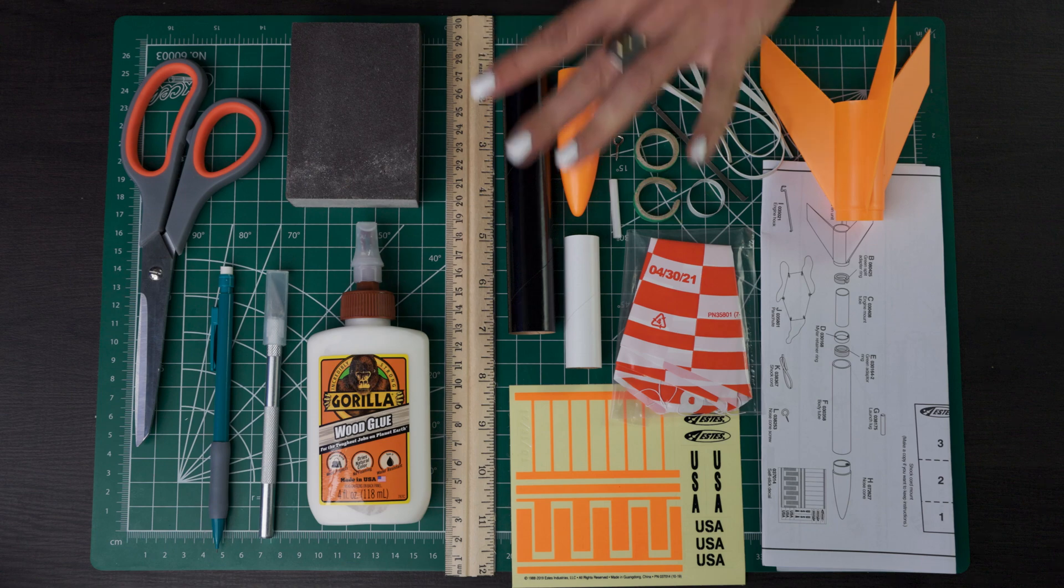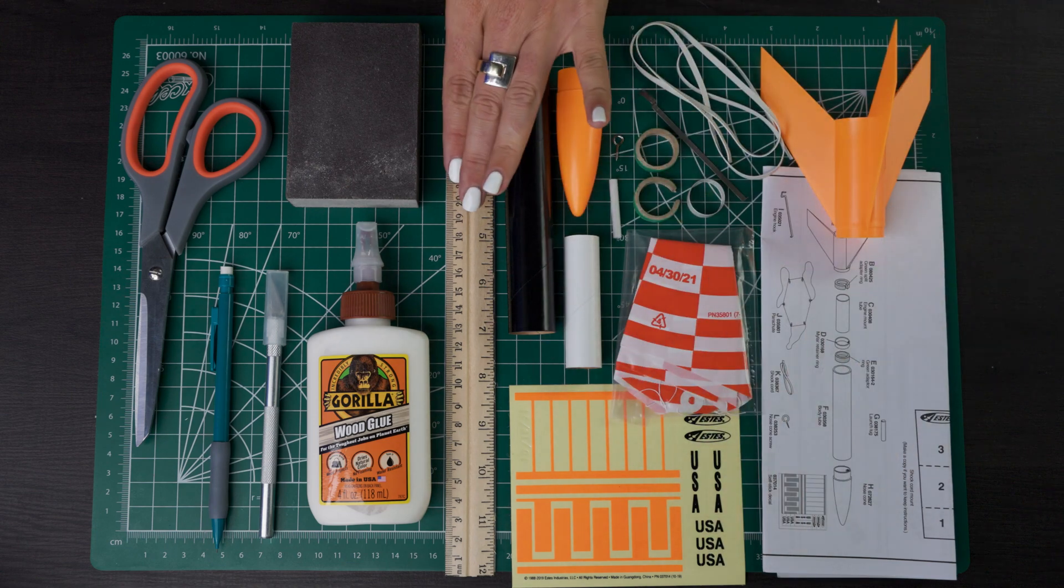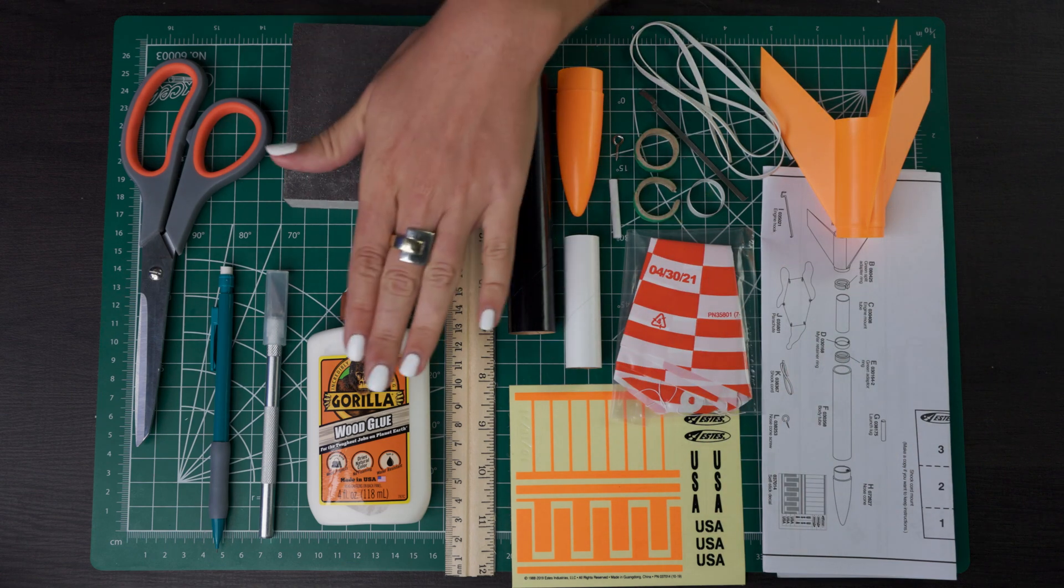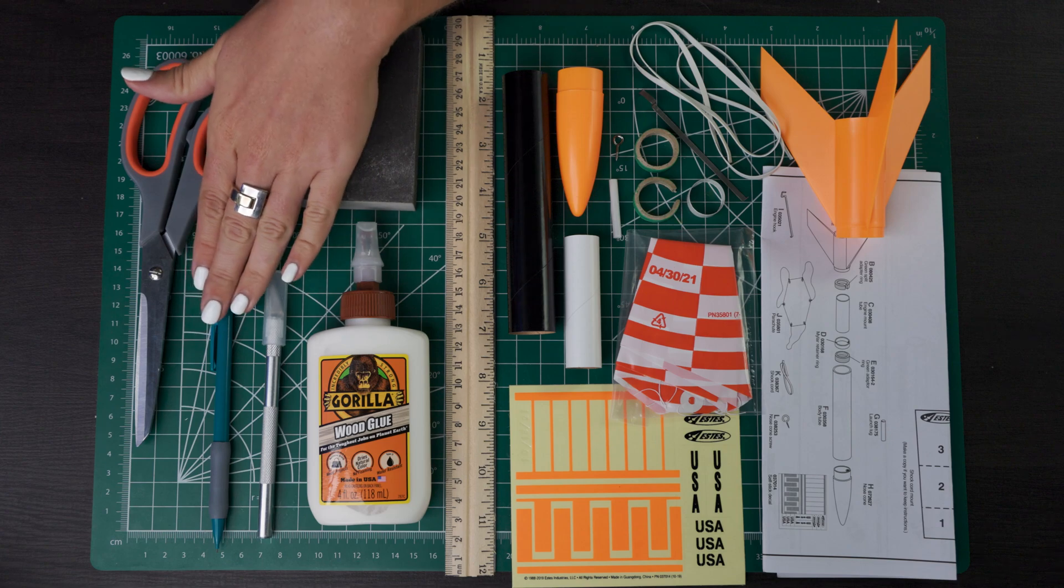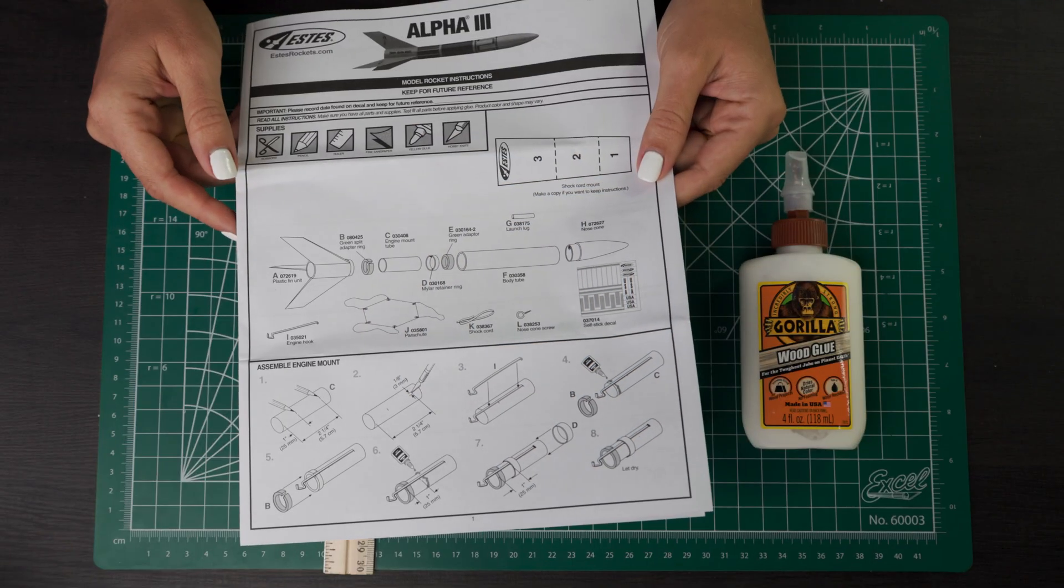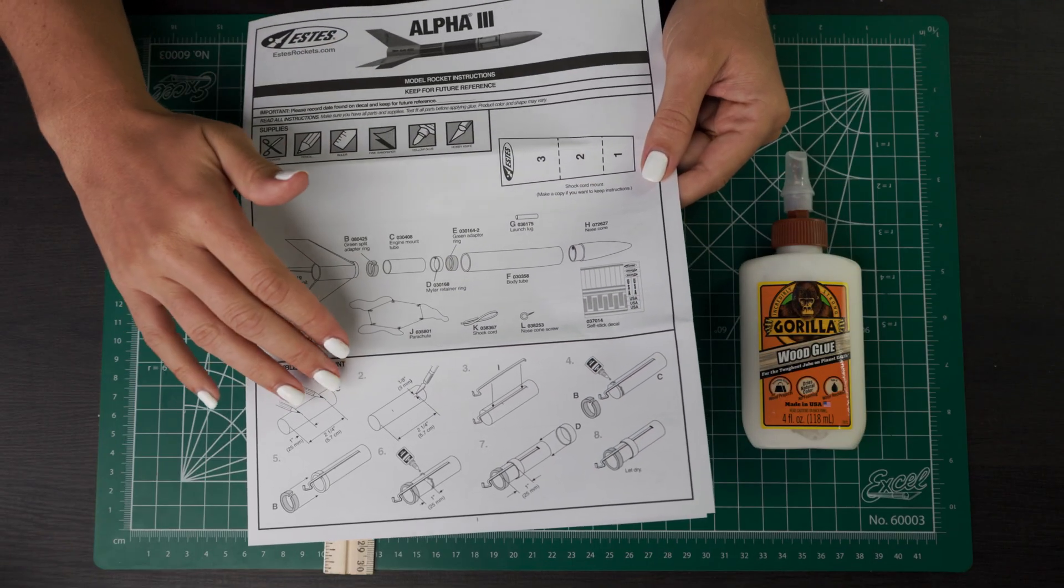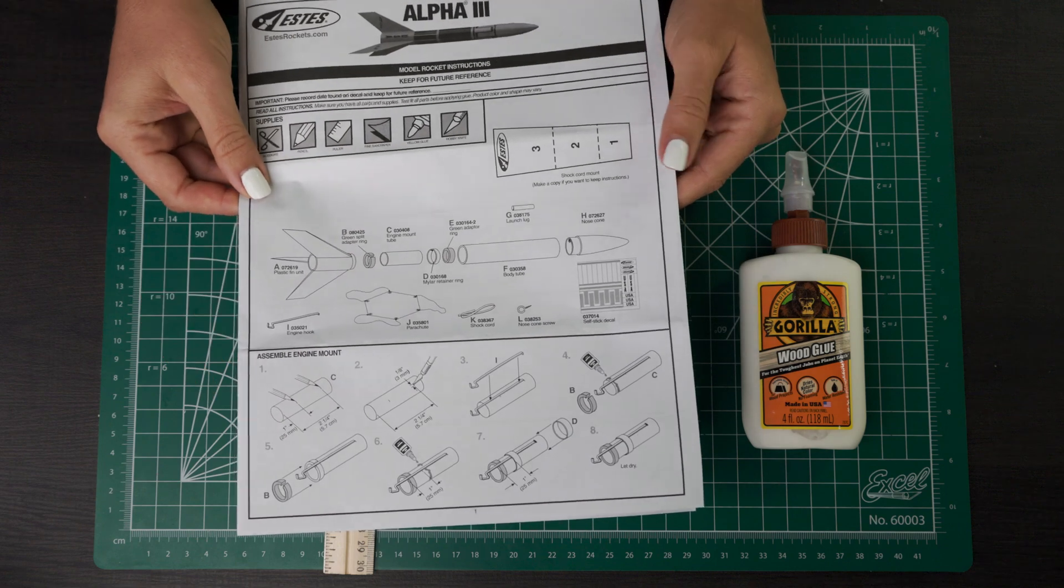For this build, we are going to need the Alpha 3 kit, a ruler, sandpaper, wood glue, a hobby knife, pencil, and some scissors. So we will be following the instructions step by step, so make sure you have yours close by and follow along.